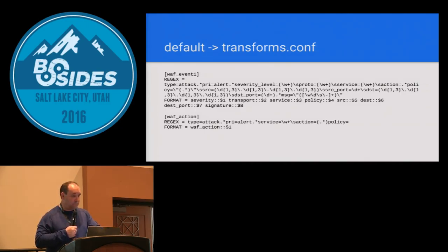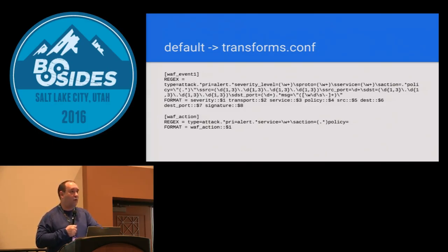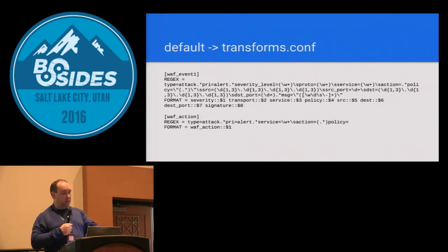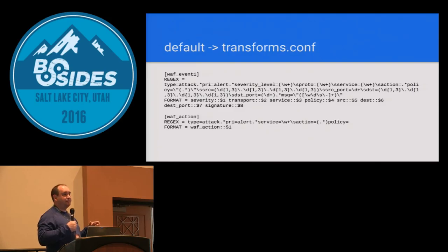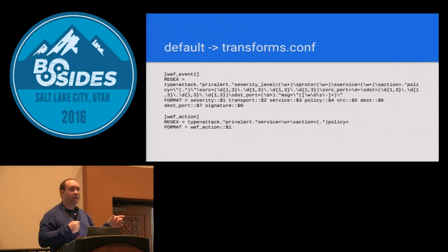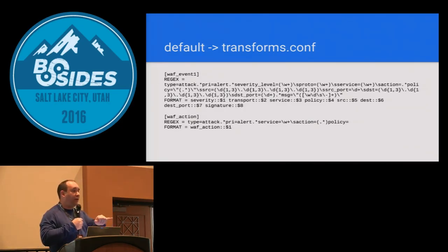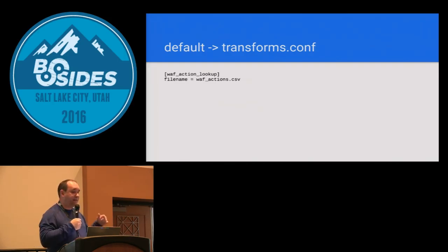For WAF admin auth, same thing — creating fields there. Another example: I'm calling it WAF event one, and I can chain a ton of these together and pull in a bunch of fields. The bottom one I want to call special attention to: I've got 'format = WAF_action' — that's my own custom field name I'm creating. This WAF product's action values in the logs were something I didn't want to work with directly, so I created this field named WAF_action and pulled that in as that field name.